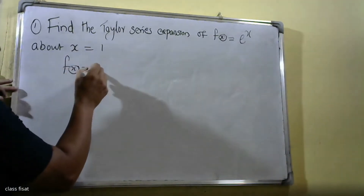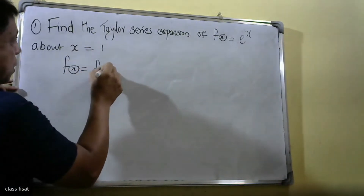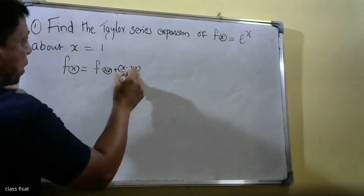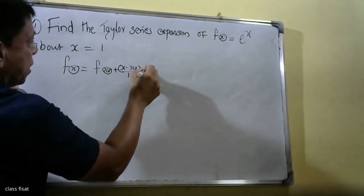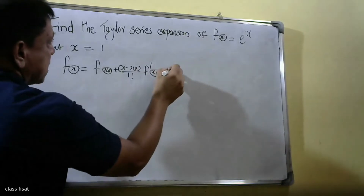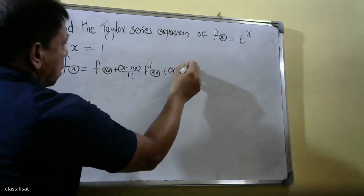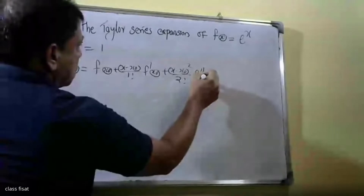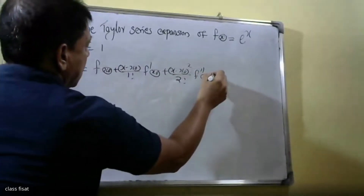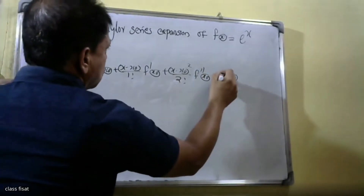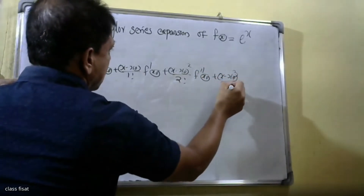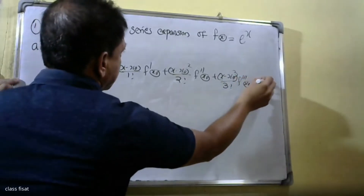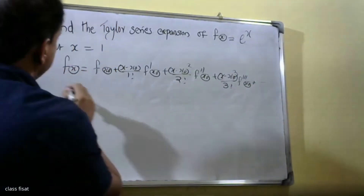The Taylor series formula is: f(x) = f(x₀) + (x − x₀)/1! · f'(x₀) + (x − x₀)²/2! · f''(x₀) + (x − x₀)³/3! · f'''(x₀) + etc. Here x₀ is equal to 1.